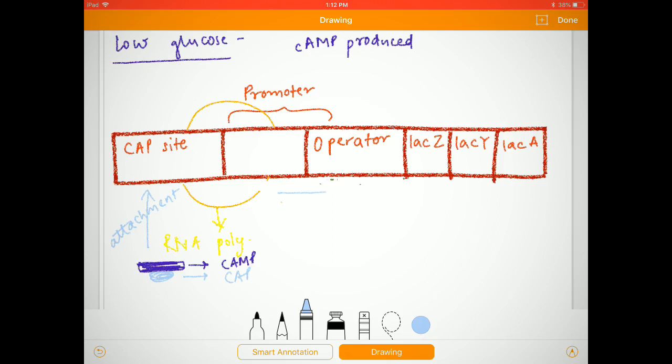And then we can observe that there is high transcription which is observed because the cell is kept in low glucose environment. So it will require some other sugar molecules for it to survive in harsh conditions.